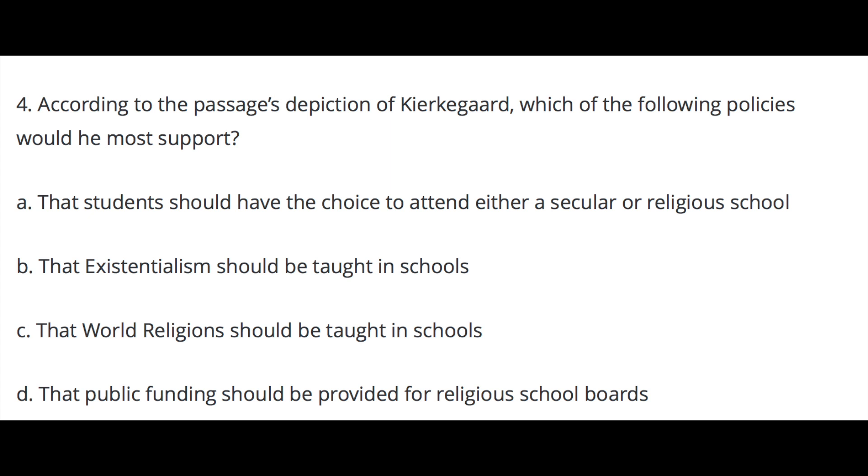Question four — according to the passage's depiction of Kierkegaard, which of the following policies would he most support? — the correct answer is D: that public funding should be provided for religious school boards. This is a reasoning beyond the text type of question. The passage describes that Kierkegaard is concerned with individual agency and choice, but only insofar as one's relation to God. In paragraph two, it is directly stated that Christianity is seen as truth. Therefore, by providing funding to religious schools, they would be more accessible to more people, including Christian school boards, and based on the direct statement in paragraph two, he would have supported all students to attend.